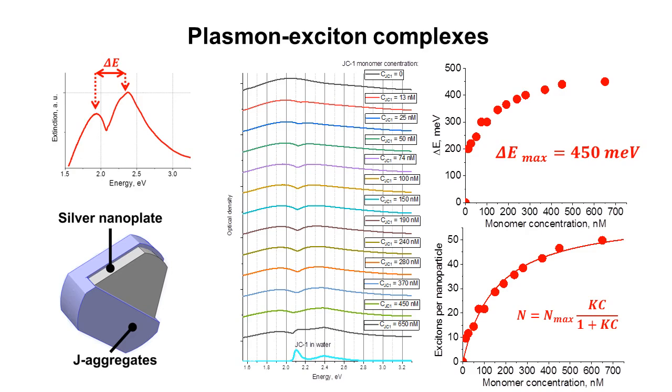We need to note that the observed mode is not truly strongly coupled, because the splitting energy was lower than the width of the initial plasmon spectrum. We can formally attribute this regime to the intermediate coupling, which has features of both induced transparency and Rabi splitting phenomena.